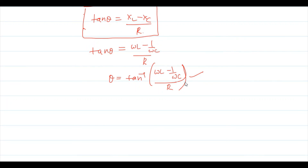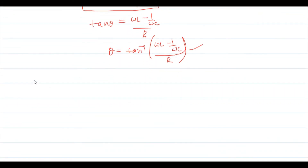In the next class, we will study the special cases of the LCR series circuit: what happens when X_L > X_C, when X_L = X_C (which is the resonance condition), and when X_C > X_L. These cases will be examined using phasor diagrams.